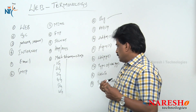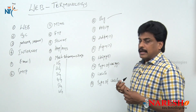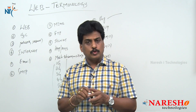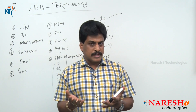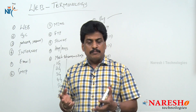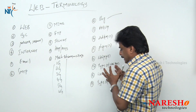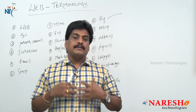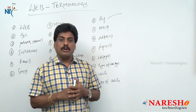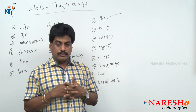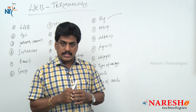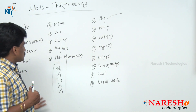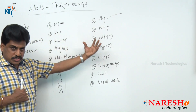Next one is website. A collection of web pages is called a website. Website is also classified into two types: static website and dynamic website. A website developed only on client-level technologies is called a static website. A website developed on both client and server-side technologies is called a dynamic website. So websites and web pages are both classified into two types. This is completely basic web terminology covered in this video session.